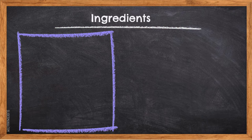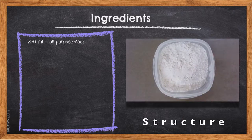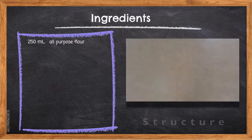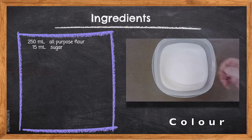Ingredients: 250 milliliters all-purpose flour. Gluten is the protein substance in flour which forms strong elastic strands when mixed with liquid; heat will harden this protein and the muffin will be held in its risen state. 15 milliliters sugar — sugar helps caramelize when subjected to the heat of the oven and turns your muffin golden brown, so you know when it's ready to come out.